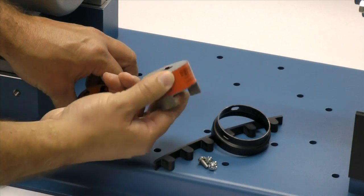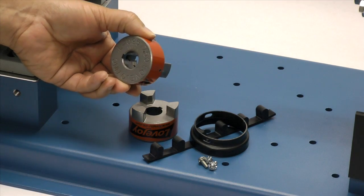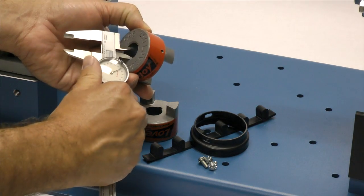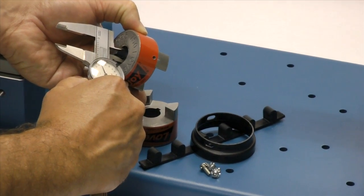When you receive the coupling, you should inspect each component to ensure that there are no visible defects, cracks, or damage from shipping. You may want to check the bore size for accuracy prior to continuing with the installation.